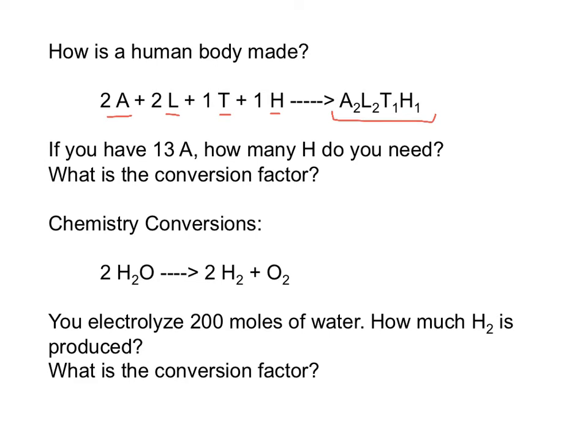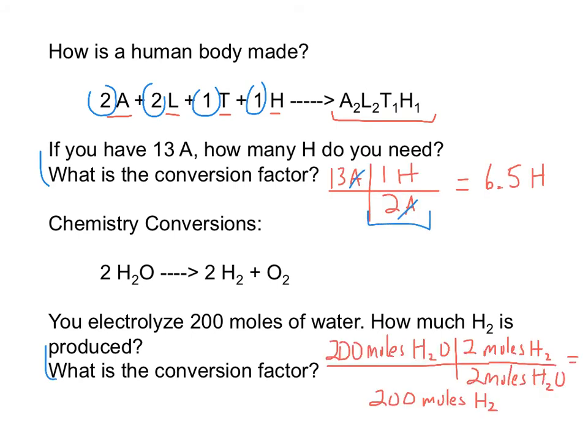You know that the coefficients in a balanced chemical equation tell us the number of each reactant, or in this case, body part, to make one body. So stop the video and answer this question and that question. And the answers are, here is our conversion factor. And for the second reaction, here is the conversion factor.